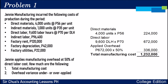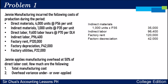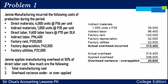Now let's compute the overhead variance, under or over-applied. We compare actual versus applied overhead. Actual overhead: indirect materials 35,000, indirect labor 96,400, factory rent 120,000, factory depreciation 42,000, factory utilities 22,000 — total actual overhead is 315,400. Applied overhead is 336,000. The difference is 20,600. Since applied overhead is larger than actual overhead, the overhead variance is over-applied.